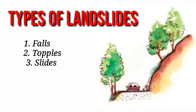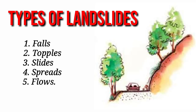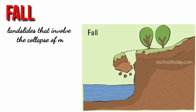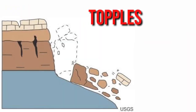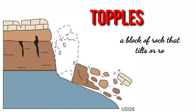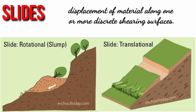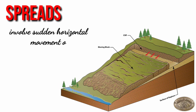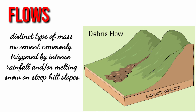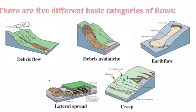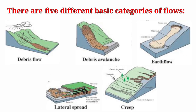The term landslide has five modes of slope movement: falls, topples, slides, spreads, and flows. Fall refers to landslides that involve the collapse of material from a cliff or steep slope. Topple landslide happens when a block of rock tilts or rotates. Slide refers to the displacement of materials along one or more discrete shearing surfaces; there are two types — the rotational slide and the translational slide. Spreads involve sudden horizontal movement on very gentle terrain. Flows are a distinct type of mass movement commonly triggered by intense rainfall and melting snow on steep hill slopes. There are five basic categories of flows: the debris flow, the debris avalanche, earth flow, the lateral spread, and the creep.